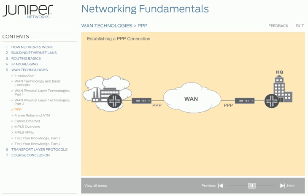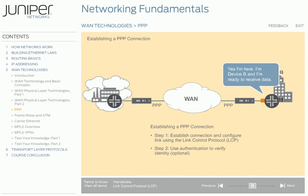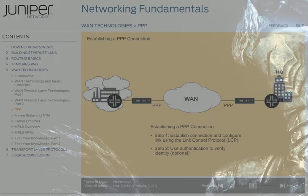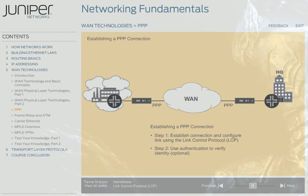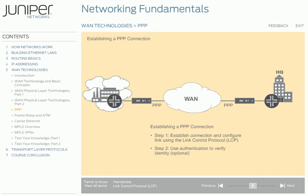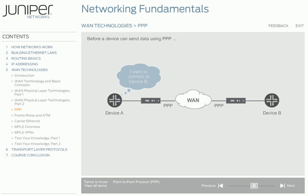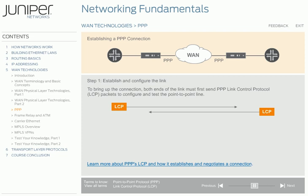First, using the Link Control Protocol, or LCP, devices establish a connection and configure the link. Next, if required, the device can verify the identity of the other device by going through an authentication process. Finally, devices use a second PPP-specific protocol, the Network Control Protocol, or NCP, to configure the Layer 3 protocols in use on the link. Before devices can send data using PPP, both ends of the link must send and receive LCP packets to configure and test the link.